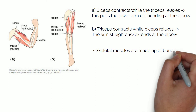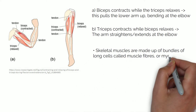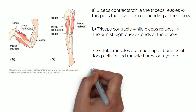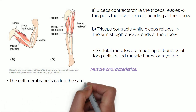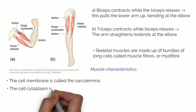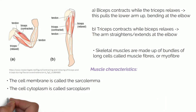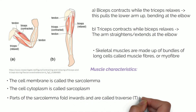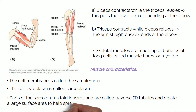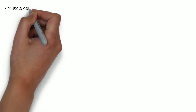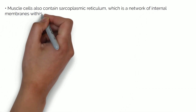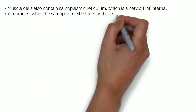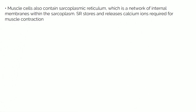Skeletal muscles are made up of bundles of long cells called muscle fibres or myofibres. Muscle cells have some key defining characteristics. The cell membrane is called the sarcolemma and the cytoplasm is called sarcoplasm. Parts of the sarcolemma fold inwards and are called transverse or T-tubules, and create a large surface area to help spread electrical impulses across the muscle fibre. Muscle cells also contain sarcoplasmic reticulum, which is a network of internal membranes within the sarcoplasm. The sarcoplasmic reticulum stores and releases calcium ions required for muscle contraction.